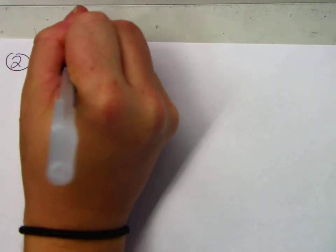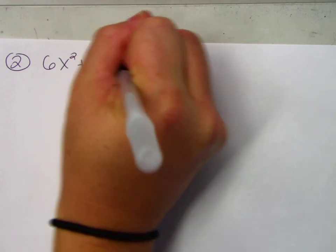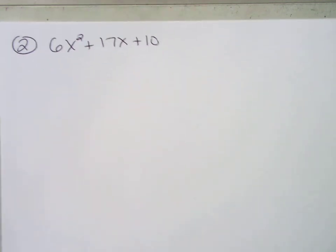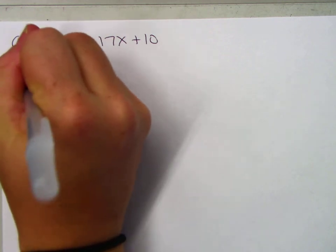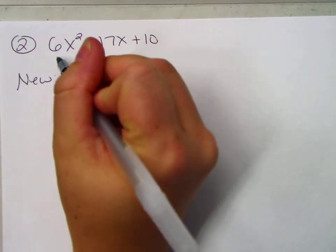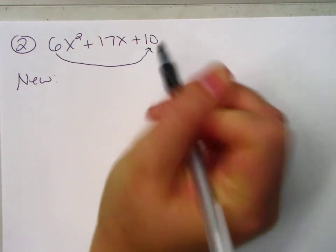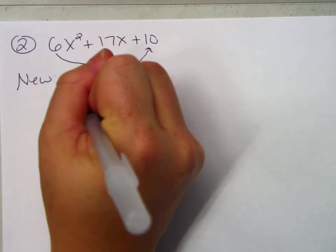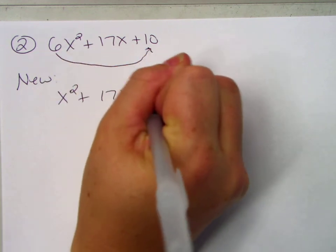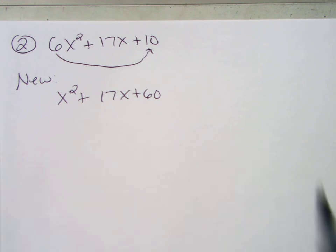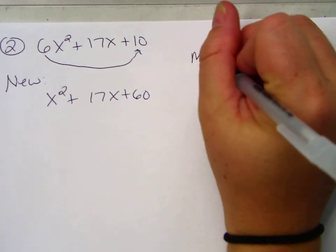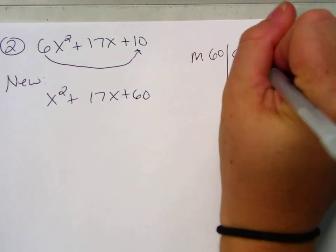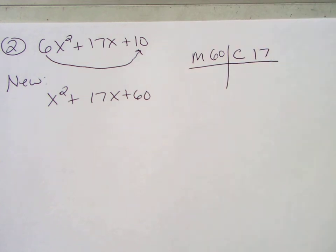6x squared plus 17x plus 10. Again, we're going to make a new trinomial. Multiply 6 times the end. And we get x squared plus 17x plus 60. So now we're going to factor our new trinomial. What multiplies to 60 combines to 17. Pause the video. Do it on your own.